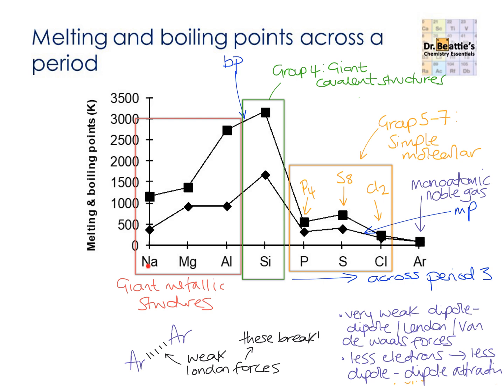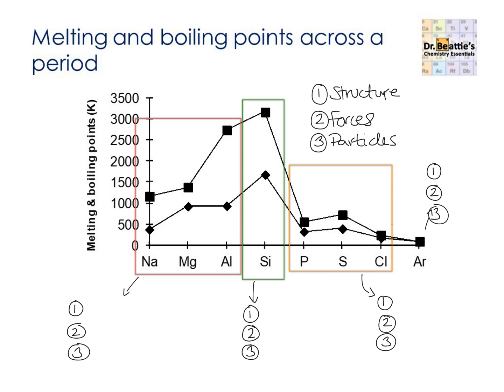This concludes our journey across period 3 and how the different types of structures can explain the different melting points and boiling points. If you had any confusion around any of these different types of structures, ensure that you go and look at the video titled Types of Structure and Bonding. Now, pause the video and try to explain, using the headings of structure, forces and particles, each of these four different areas of period 3.